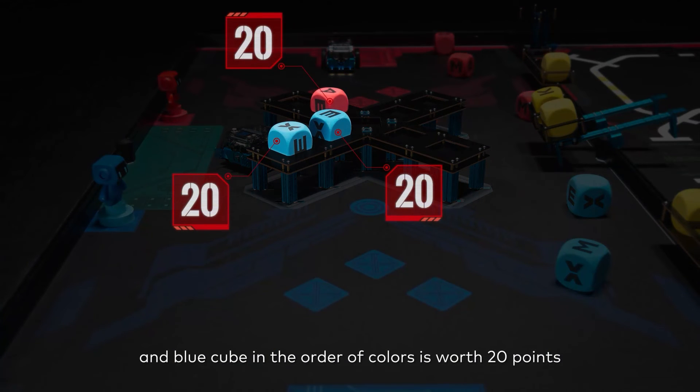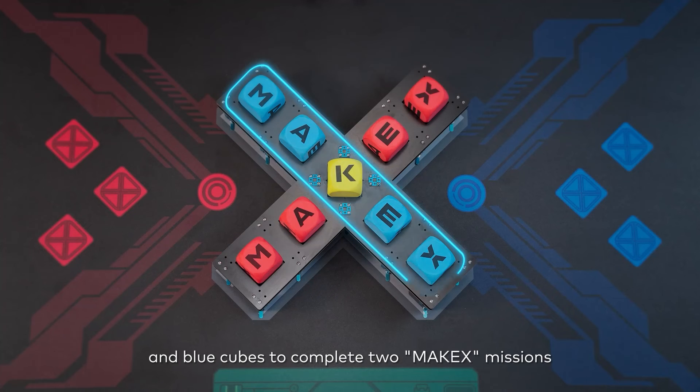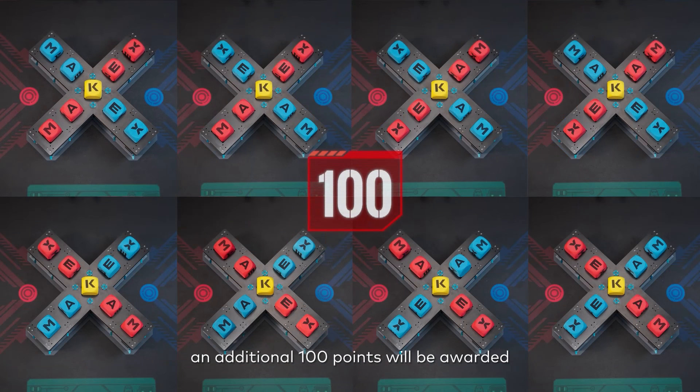Each successful embedding of a red and blue cube in the order of colors is worth 20 points, and if both players use red and blue cubes to complete two Make X missions, an additional 100 points will be awarded.